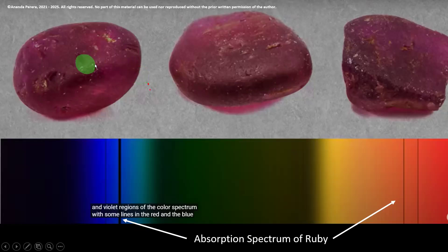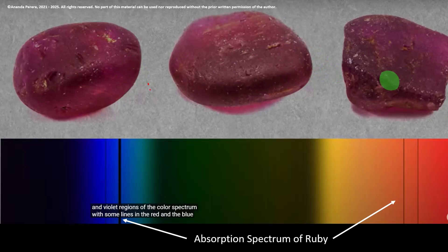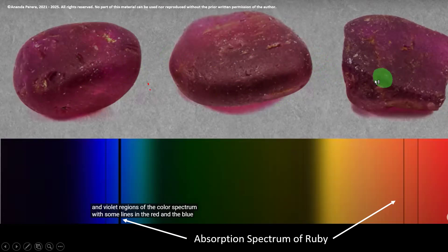These are ruby rough stones. They are pebbled because of water — because of water or erosion. The shape is like pebbles.